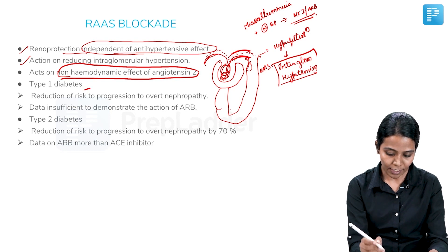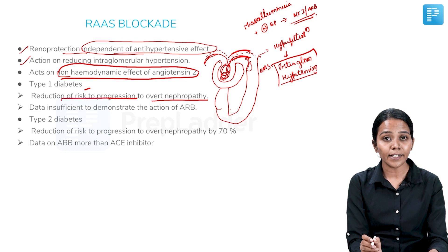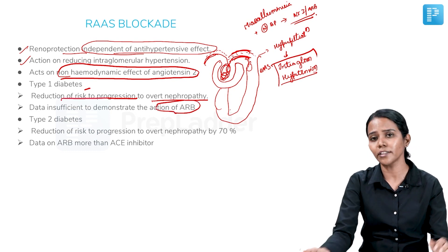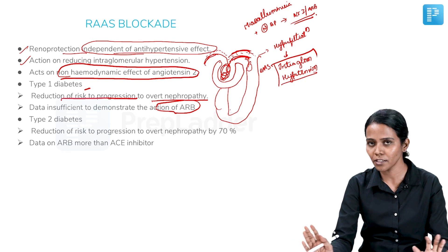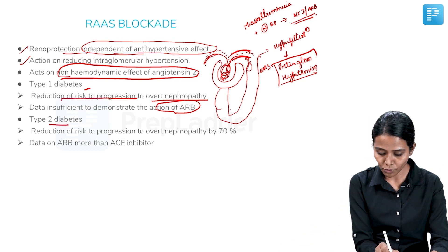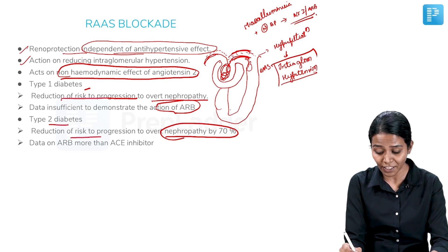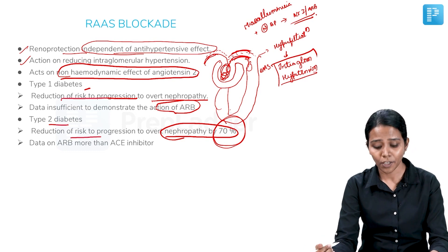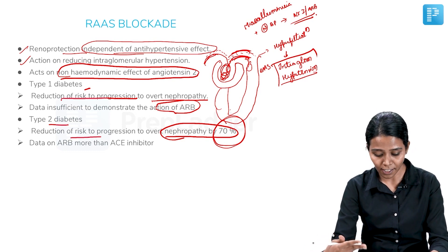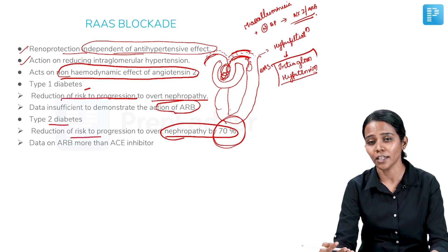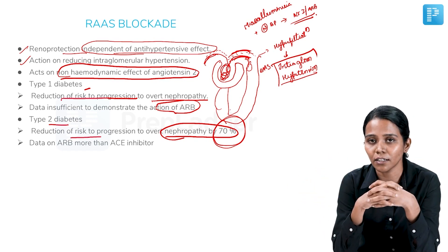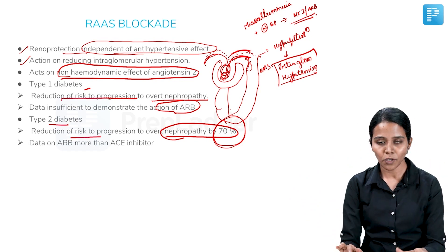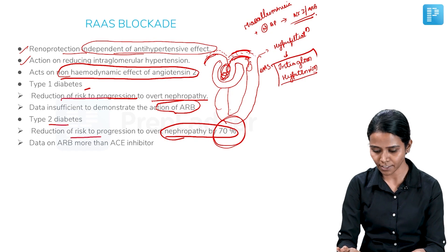In type 1 diabetes, there is reduction of risk of progression to overt nephropathy. Data is insufficient to demonstrate the action of ARB — all the trials in type 1 diabetes were done with the ACE inhibitor captopril. In type 2 diabetes, it reduces the risk of progression to overt nephropathy by 70%, which is a very significant number. The trials in type 2 diabetes, like the IRMA trial or MARVAL trial, were done on ARB, so data for ACE inhibitor is lacking. But theoretically, there should be no difference between the action of ACE inhibitor or ARB in patients with diabetes and kidney disease, so any of these can be given.